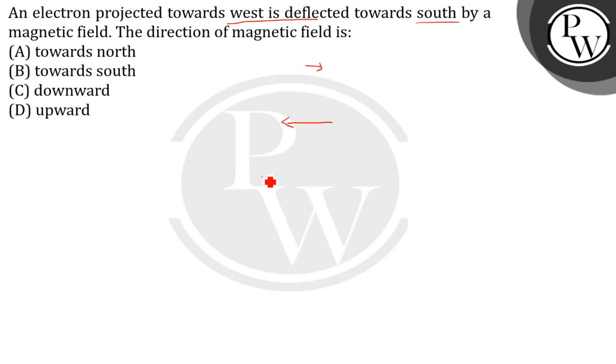So here we will apply the right hand thumb rule. We will be applying the right hand thumb rule and we get the direction of the magnetic field here in this way - that is below the wire and it is from the north to the south, from the north to the south direction. So it is acting downwards. Option number C, downward, is the correct answer.